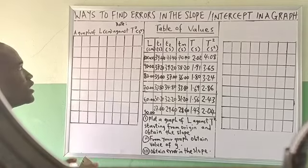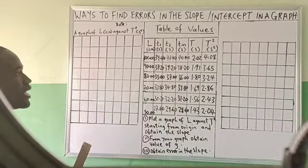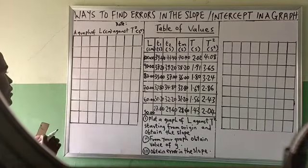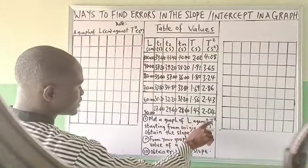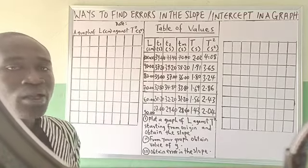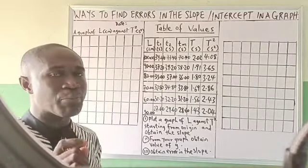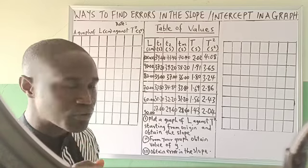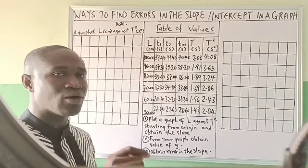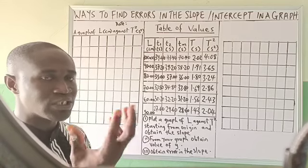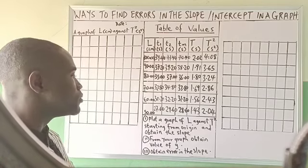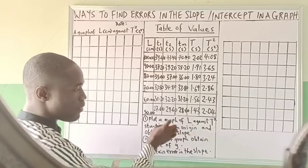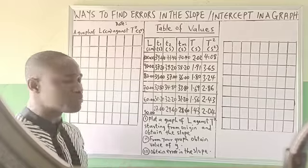After writing your date and the title, the next thing is to label your Cartesian axes. Remember they say plot a graph of L against T squared, starting from the origin, and obtain the slope. We have posted a video on how to choose an appropriate scale — check our channel, just type Chidons Daniel, how to choose appropriate scale during graph plotting. We will use the knowledge from that video to sort this issue: plot a graph of L against T squared starting from origin and obtain the slope.